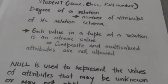Each value in a tuple of a relation is an atomic value. It means a value in a tuple is not divisible into components. Hence, composite and multi-valued attributes are not allowed.